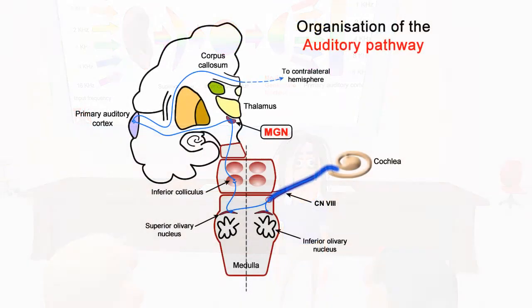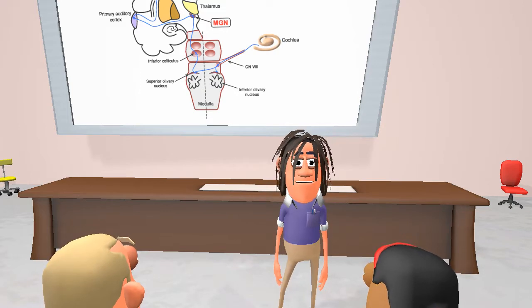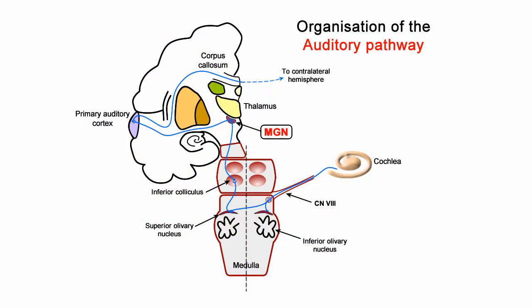We should note that the input from each ear projects to both ipsilateral and contralateral superior olives, meaning that the information that reaches each auditory cortex comes from both ears. Connections between the left and right auditory cortices are via the commissural connections of the corpus callosum.